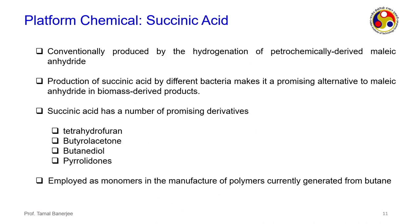The third platform chemical is succinic acid, conventionally produced by hydrogenation of petrochemical-derived maleic anhydride. Producing succinic acid via different bacteria makes it a promising bio-based alternative. Succinic acid has many promising derivatives: tetrahydrofuran (THF), gamma-butyrolactone, and butanediol — all employed as monomers in manufacturing polymers currently generated from butane — providing a non-fossil fuel route.